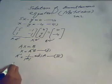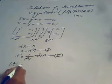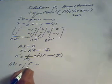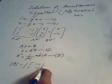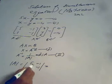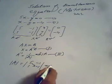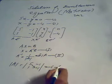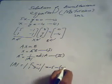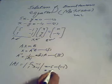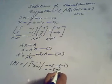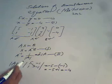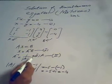Now we calculate the determinant of A. The determinant of [5, -1; 1, -1] is computed by multiplying diagonally: (5 × -1) minus (-1 × 1), which gives -5 plus 1, equals -4.